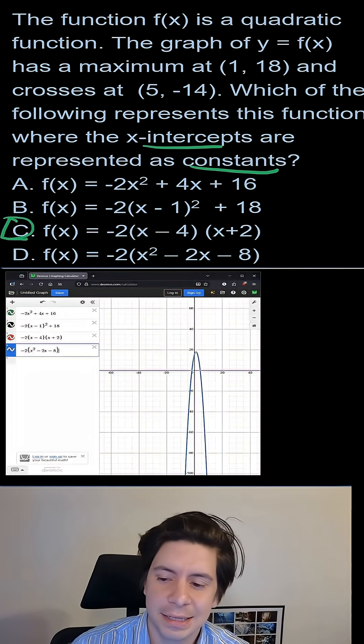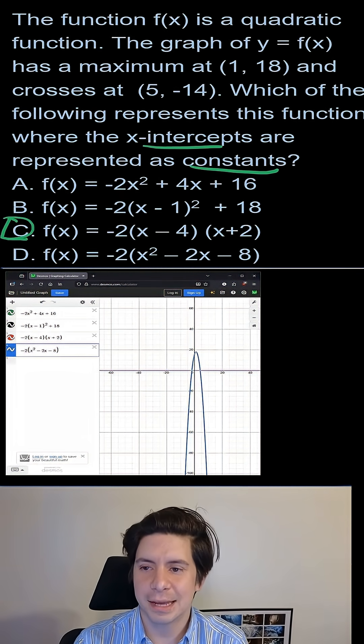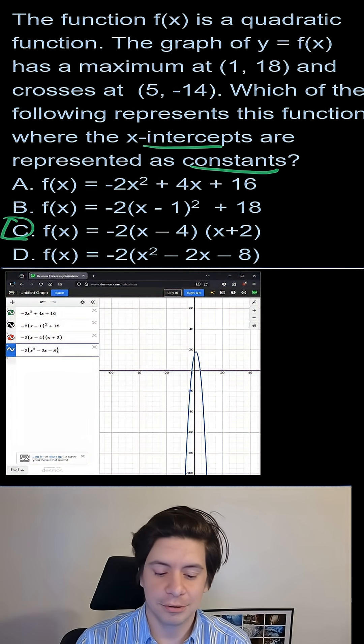So it is C here. And if you have any questions on why, feel free to ask. But this is just about testing if you understand the form that shows you the intercepts right off the bat.